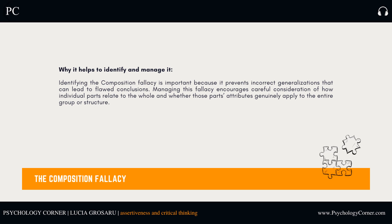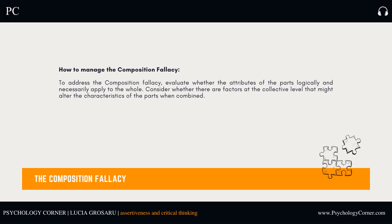Identifying the composition fallacy is important because it prevents incorrect generalizations that can lead to flawed conclusions. Managing this fallacy encourages careful consideration of how individual parts relate to the whole and whether those parts' attributes genuinely apply to the entire group or structure. To address the composition fallacy, evaluate whether the attributes of the parts logically and necessarily apply to the whole, and consider whether there are factors at the collective level that might alter the characteristics of the parts when combined.